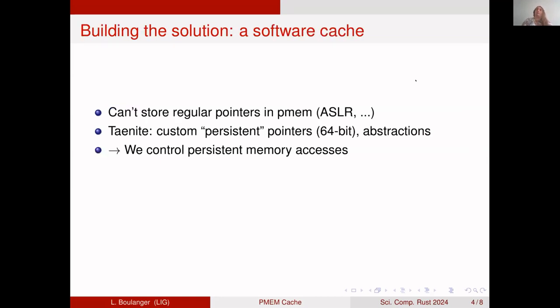To find the solution to this problem, we need more context about Taenite. You can't really store regular pointers in persistent memory for many reasons, but a big one is ASLR - address space layout randomization. It means that when you start a program, the start address of your allocated data will be randomized. If you store a pointer in persistent memory and restart the program, the pointer will still be there but will point to nothing. So in Taenite, we have our own persistent pointers that are hardcoded to 64 bits. We have a bunch of abstractions over that - a persistent memory allocator and data structures that work with that. In short, we do control persistent memory accesses.